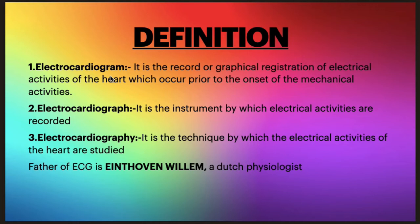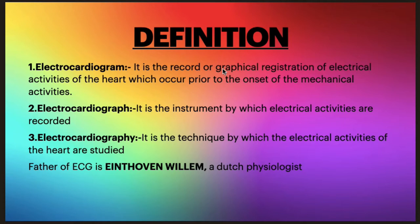First, the definition: what is an electrocardiogram? An electrocardiogram is a record or graphical representation of the electrical activities of the heart which occur prior to the onset of mechanical activities. We have all seen an ECG paper — it's a lengthy paper with a graph on it. So the electrocardiogram is that record or graphical representation of the electrical activities of your heart.